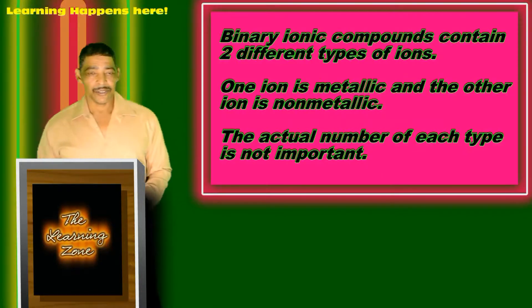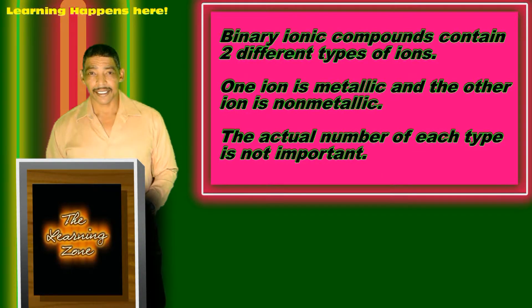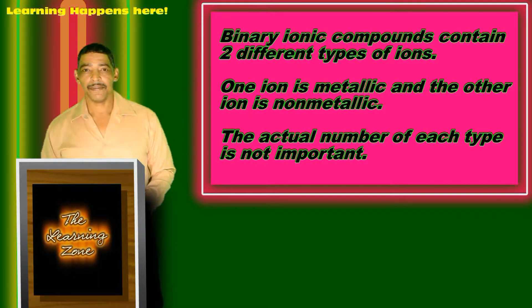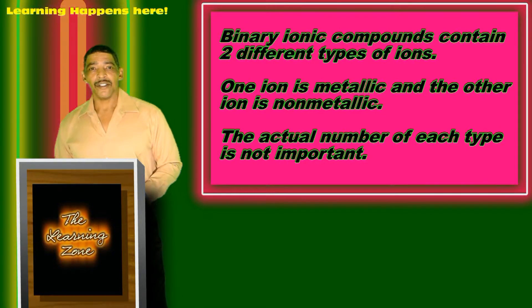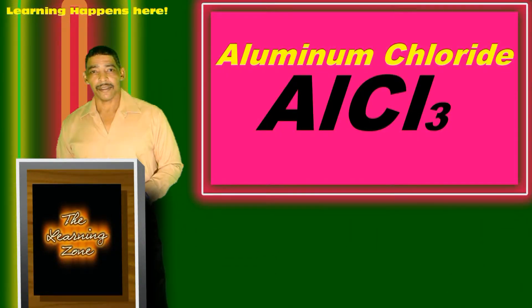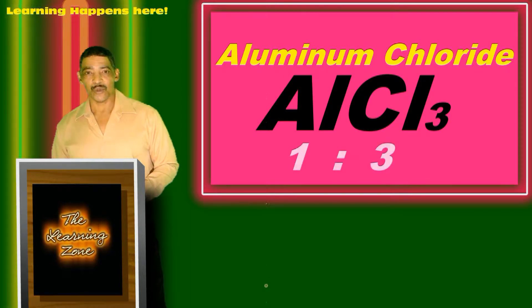A binary ionic compound consists of two different elements, where one element will be metallic and the other element will be non-metallic. It is important to remember that in a binary ionic compound, the ratio of atoms is not important. For example, the compound aluminum chloride is a binary ionic compound. However, the ratio of atoms is one to three.